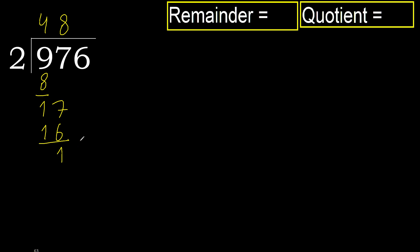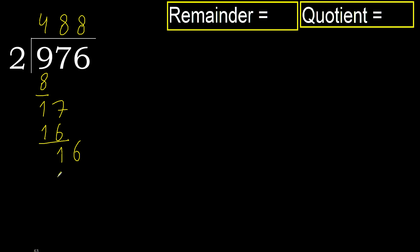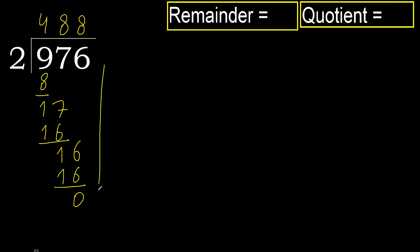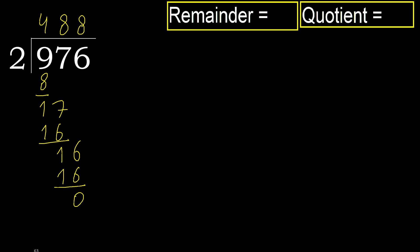Next, 16. 2 multiplied by 8 is 16, it is not greater. Subtract. Next, there is no number, therefore finish it.